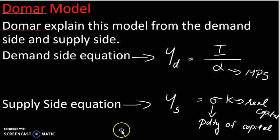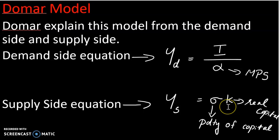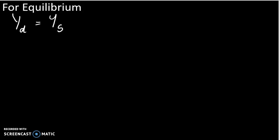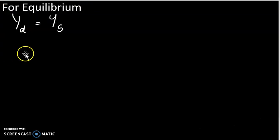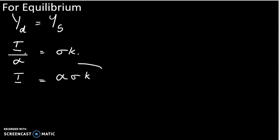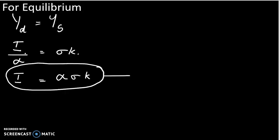The supply side equation is: YS equals sigma times K, where sigma is the productivity of capital and K is the real capital stock. When demand equals supply, we set YD equal to YS: I divided by alpha equals sigma times K, which gives us investment equal to alpha times sigma times K.